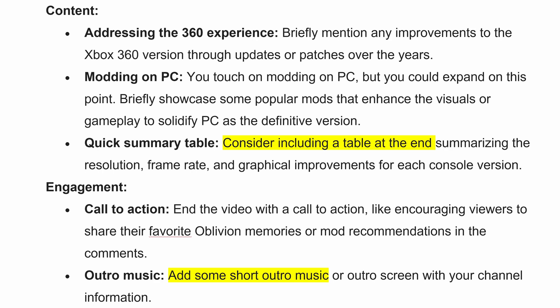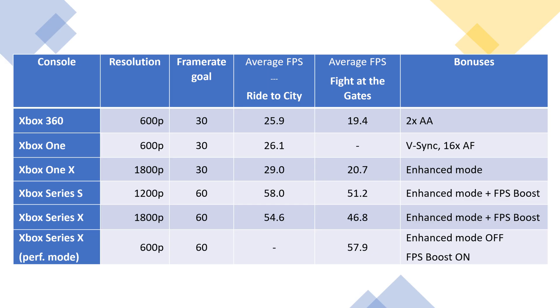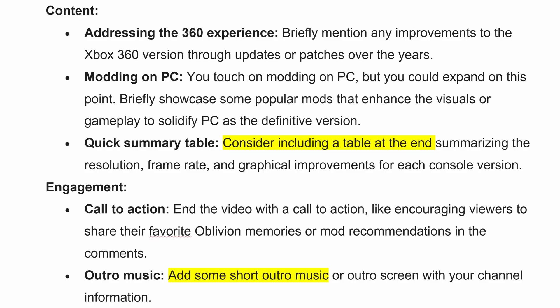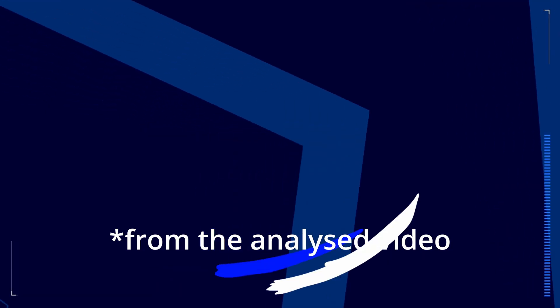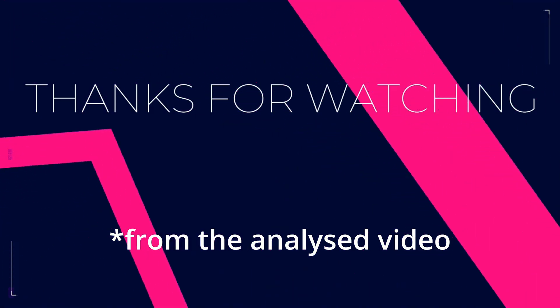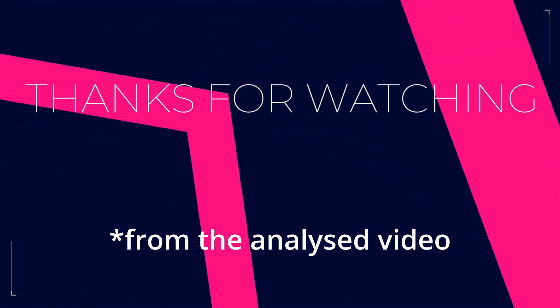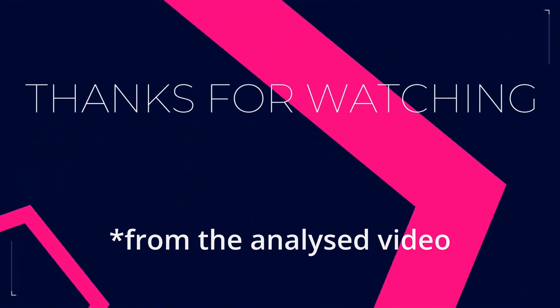It suggested I include a summary table — consider including a table at the end. What, like this one? Yeah, I actually have a very clear summary table in the video. So what does that mean — it didn't know I had one, or is this just generic advice? It also suggested that I include outro music in the video. What, you mean like this? I just don't quite understand how it could not know that there was outro music in my video. It's interesting the mistakes it makes and why it made those mistakes.